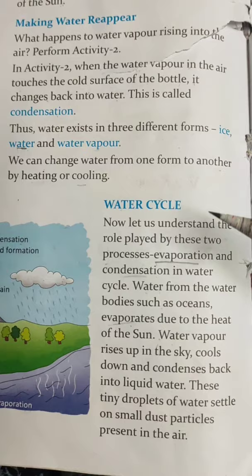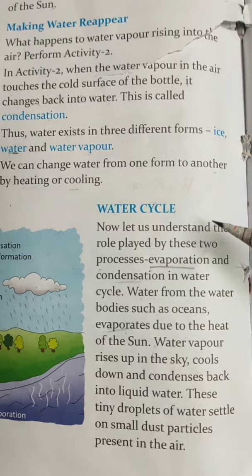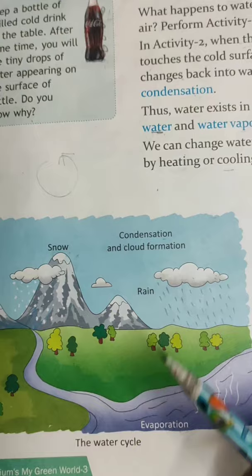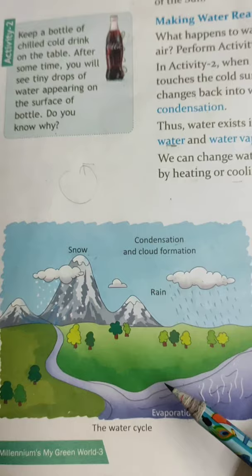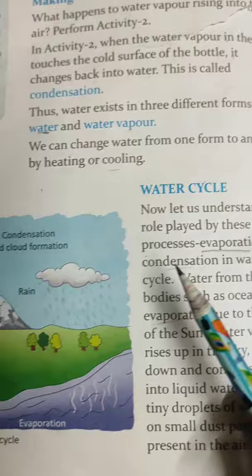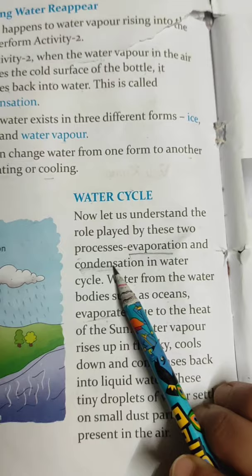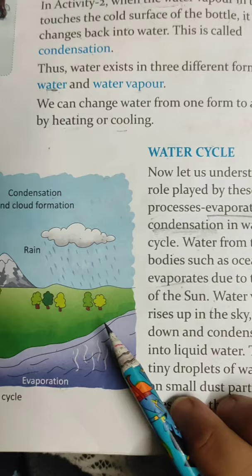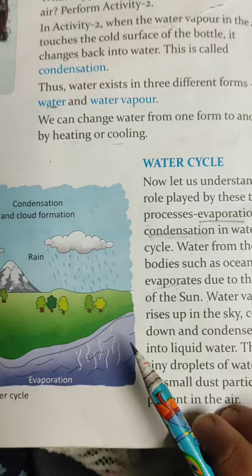Now, water cycle. We had a question: how does water travel on earth — from land to air and from air back to land? For that, we need to understand the water cycle. The water cycle is the process in which evaporation and condensation continuously happen on our earth. Water from water bodies such as oceans evaporates due to the heat of the sun. Water vapor rises up in the sky, cools down, and condenses back into liquid water.